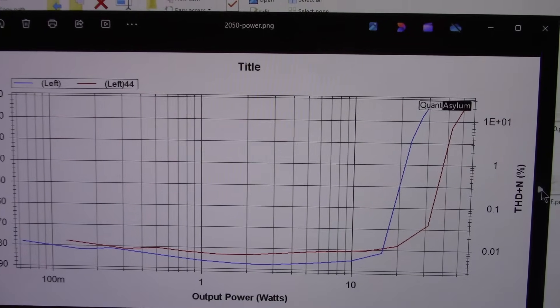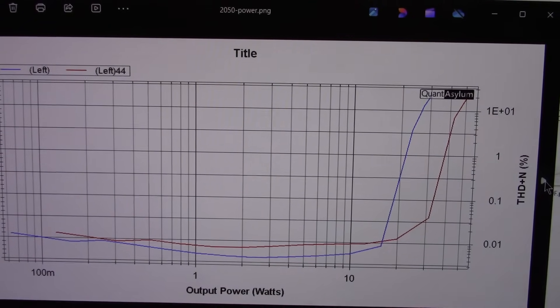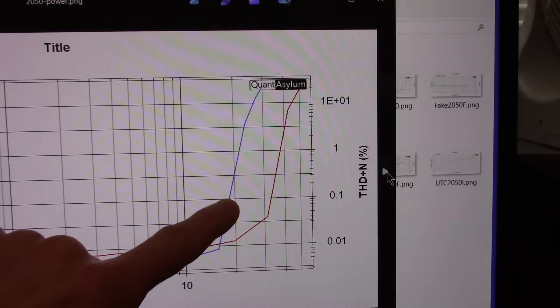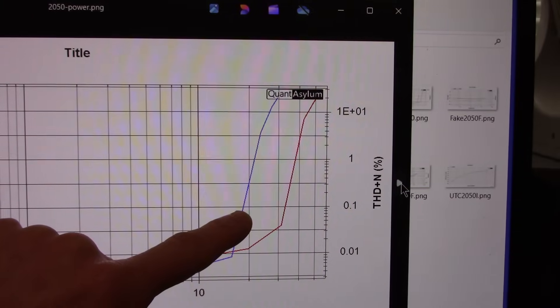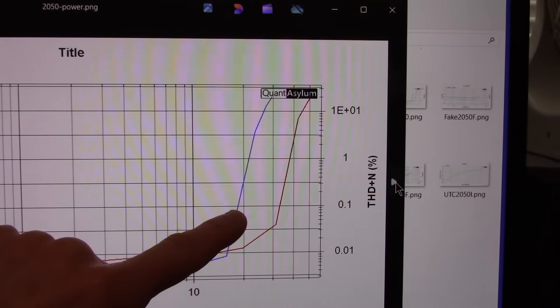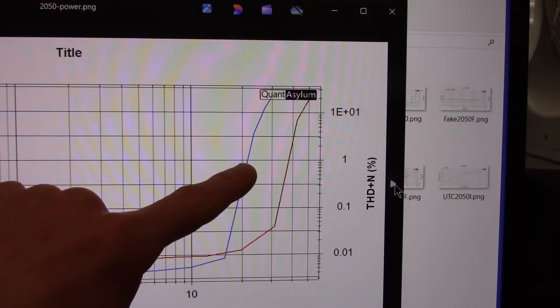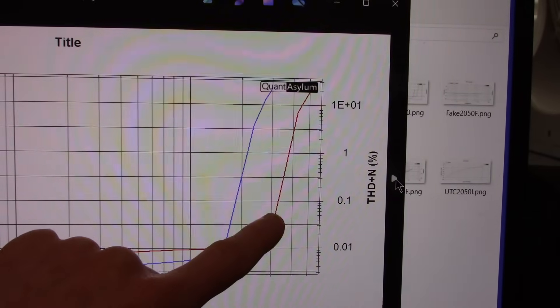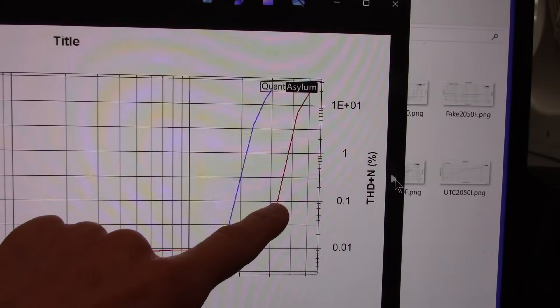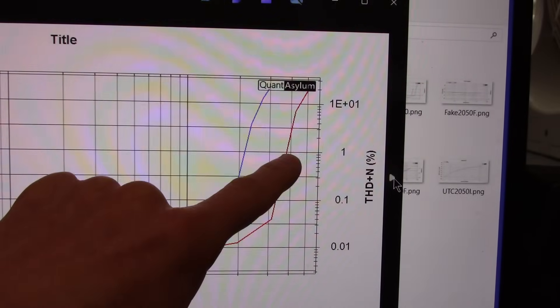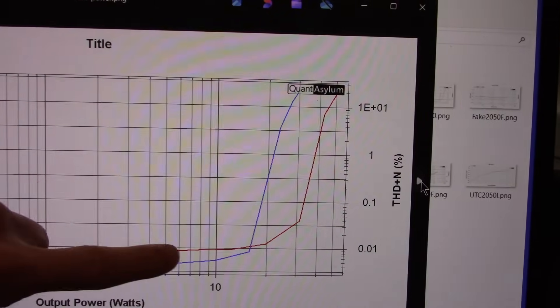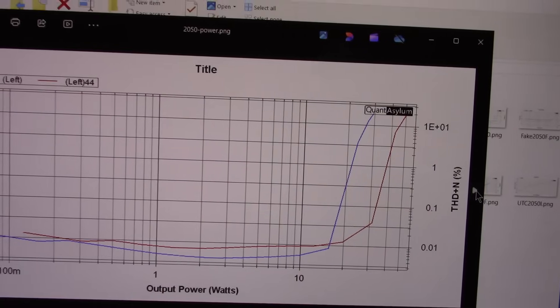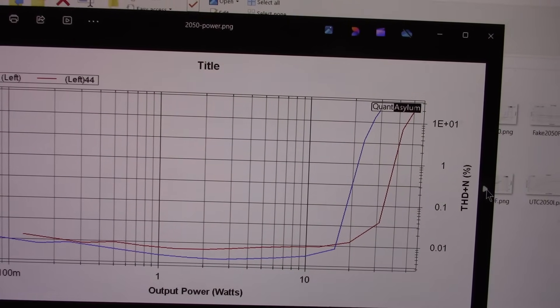Here's the authentic TDA2050 which was about the same with the UTC version. You can see here the 8 ohm load crossed at around 17, 18 watts and we're above 20 watts, close to 21 watts. And of course at 4 ohms we're above 30 watts here at the point one line and like 37 watts, where of course the fake chip just folded up. The actual TDA chips can handle the 4 ohm loads pretty well at plus minus 20 volts.